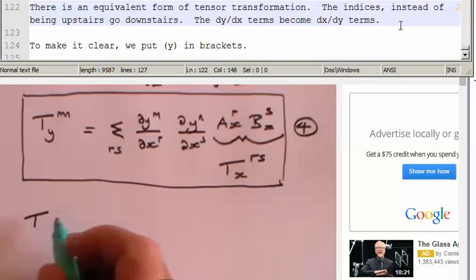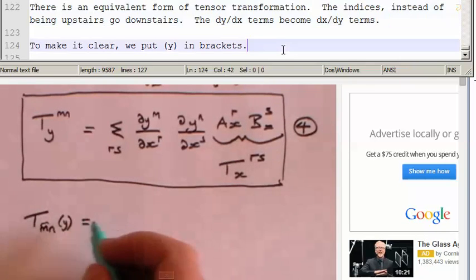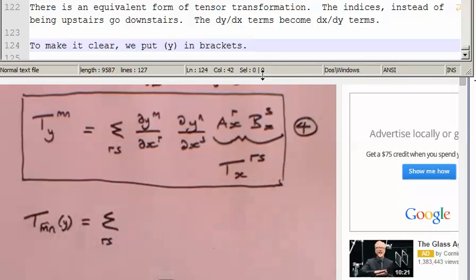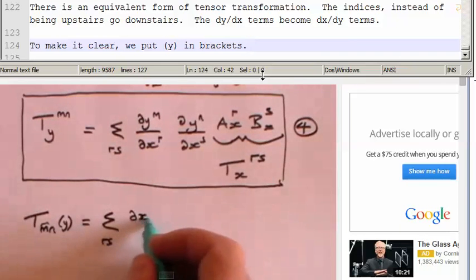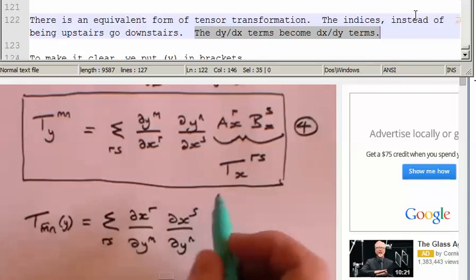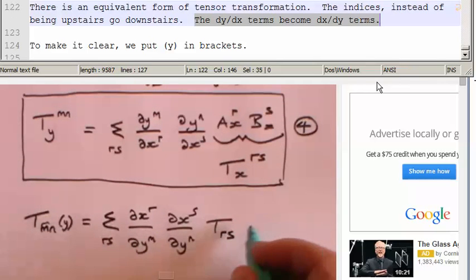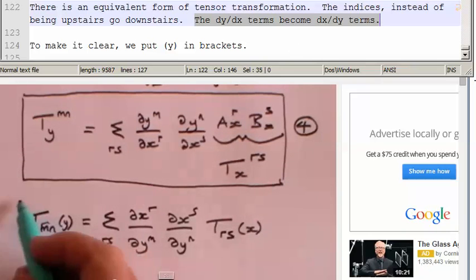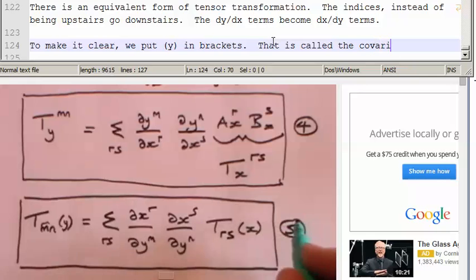You get the t and now it's in the y frame of reference but the m and n go downstairs. So I'll put the m and n down here and to make it clear I'll put y in brackets. So t_mn in the y frame of reference equals, again you've got this summation term over r and s. And now these two terms just go upside down, dx^r by dy^m, dx^s by dy^n, just inverting these terms here. And then the tensor term again goes downstairs but it's in the x frame of reference. And that is called the covariant transformation and I'm going to call that equation number five.